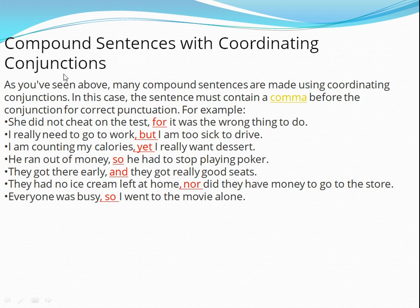Many compound sentences are made using coordinating conjunctions. In this case, the sentence must contain a comma before the conjunction for correct punctuation. For example: 'She did not cheat on the test, for it was the wrong thing to do.' 'I really need to go to work, but I am too sick to drive.'